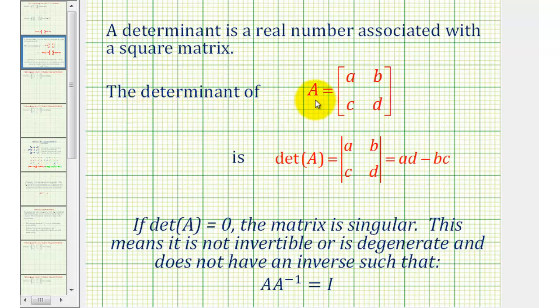The determinant of matrix A, which is a two by two matrix using elements a, b, c, and d, can be written using this notation here or this notation here. Notice these vertical bars look like the absolute value symbol, but for a matrix it means a determinant, which is equal to the difference of the product of the two diagonals.